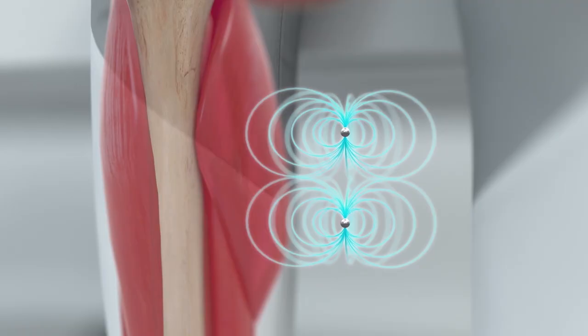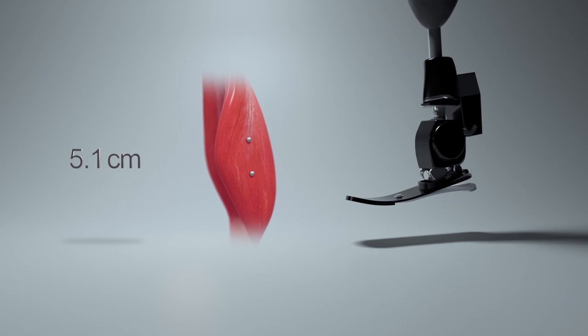Additionally, they plan to insert the magnets into human muscle tissue and use magnetomicrometry to control prostheses and exoskeletons to assist persons with movement challenges.